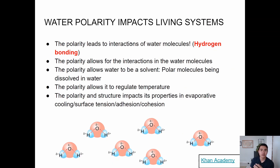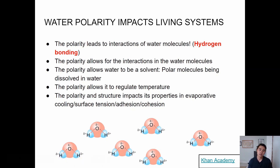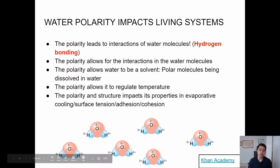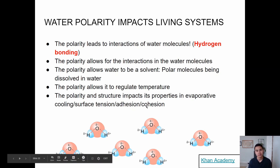Polarity leads to interaction of water molecules through hydrogen bonding. Polarity also allows water to be a solvent — the ability for something to dissolve another substance. Water is actually called the universal solvent, meaning it can dissolve many different things. Polarity also allows it to regulate its temperature, and its structure impacts properties like evaporative cooling, surface tension, adhesion, and cohesion. We'll be talking about those coming up.